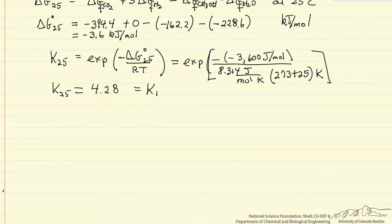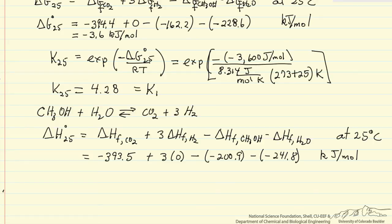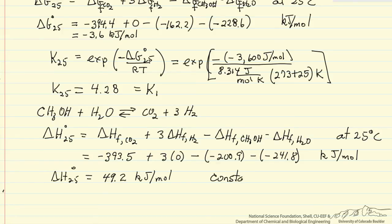To get the equilibrium constant at another temperature, I first have to calculate the heat of reaction. The format is the same as for delta G: heat of formation of products minus heat of formation of reactants, with stoichiometric coefficients. Substituting in the values from the table gives the heat of reaction at 25 degrees C equal to 49.2 kJ per mole. This is positive, so the reaction is endothermic. We'll assume this is constant over the narrow temperature range.